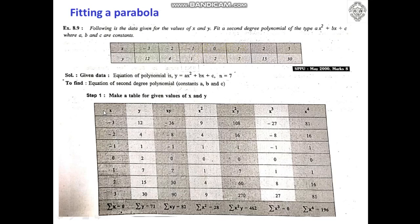We make a table with columns: X, Y, XY, X², X²Y, X³, and X⁴. Writing all values and computing each term for all seven observations, the summations are: Σ(X) = 0, Σ(Y) = 71, Σ(XY) = 82, Σ(X²) = 28, Σ(X²Y) = 462, Σ(X³) = 0, and Σ(X⁴) = 196.